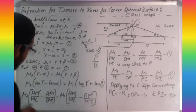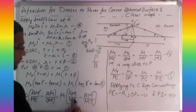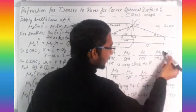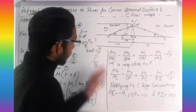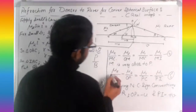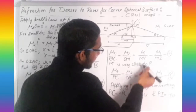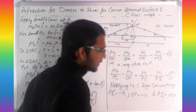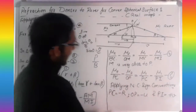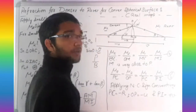Since AM appears in all terms, it cancels out. After cancellation, we get: mu2 over MC minus mu2 over OM equals mu1 over MC minus mu1 over MI. This is equation four. Since M is very close to P, we can replace M with P, giving equation five: mu2 over PC minus mu2 over OP equals mu1 over PC minus mu1 over PI. Applying sign conventions: PC equals minus R, OP equals minus u, PI equals plus v.